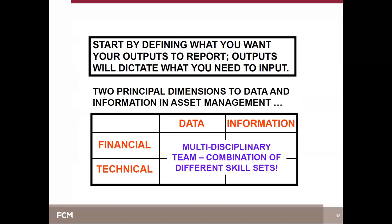Here's a simple example to clarify inputs, processes, and outputs: you have a truck bought three years ago in 2016, and trucks in your municipality last eight years. The known data — today is 2019, acquisition year 2016, estimated useful life eight years — are the inputs. The calculations: the truck is three years old, 2016 plus eight is 2024, remaining useful life is five years. Those calculations are the processes. The replacement year 2024 is the output.